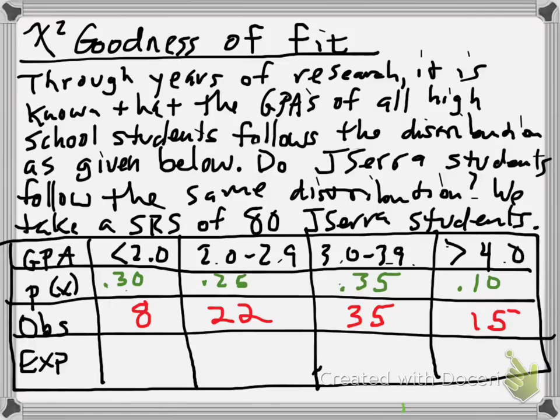Let's try this problem as a good example to maybe help you for the quiz. It's a chi-squared goodness of fit test. Not only will this help you for the quiz, but it might very well help you for the test next Friday. So here's the problem. Through years of research, it is known that the GPAs of all high school students follow the distribution as given below. Do J. Sarah students follow the same distribution?